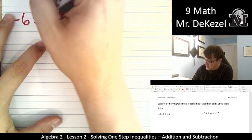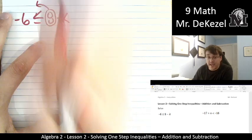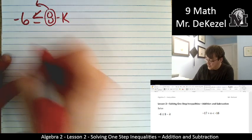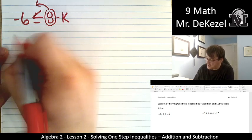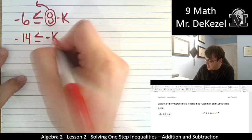We want to get k all by itself. So we're going to move the positive 8 over and that means it becomes a negative 8 on the other side. So -8 - 6, that's -14. And that's ≤ -k.